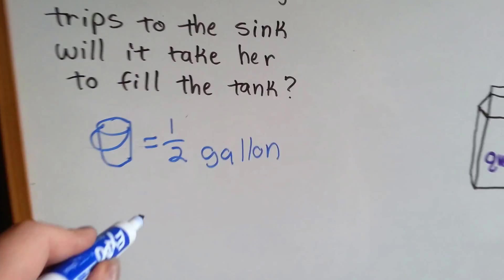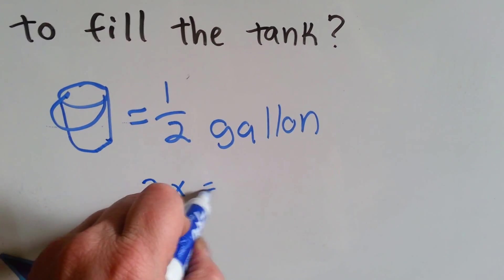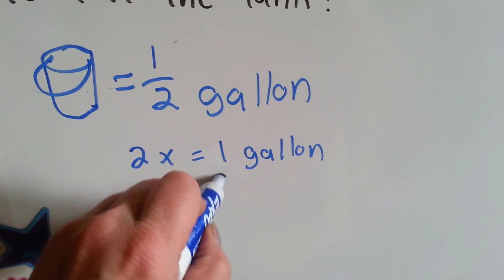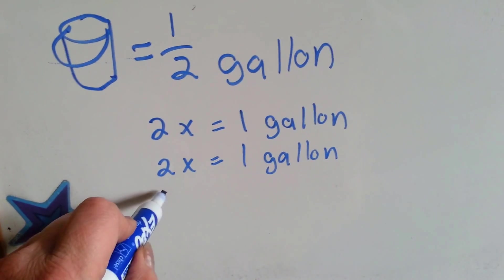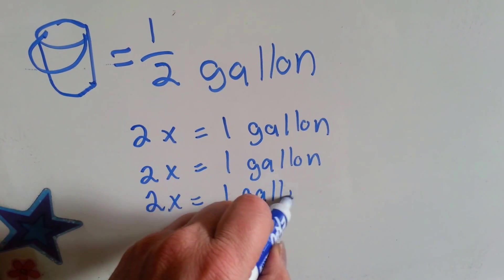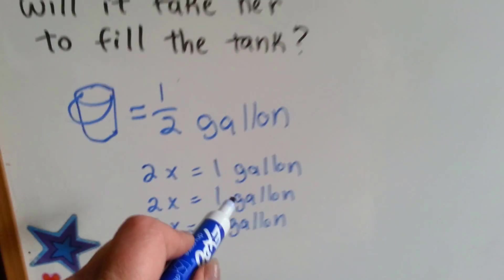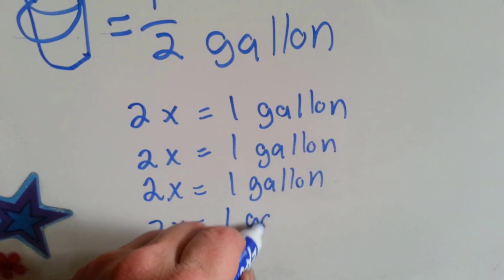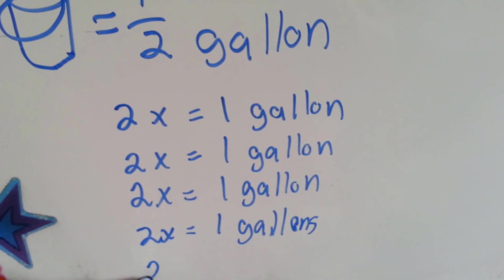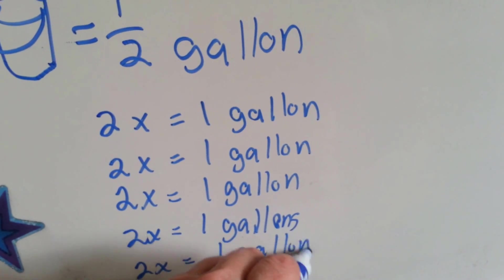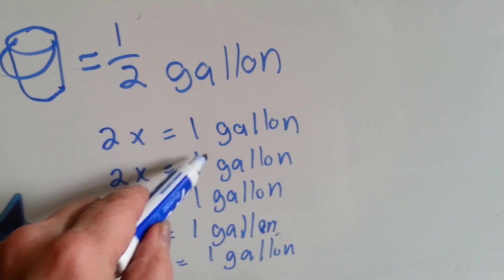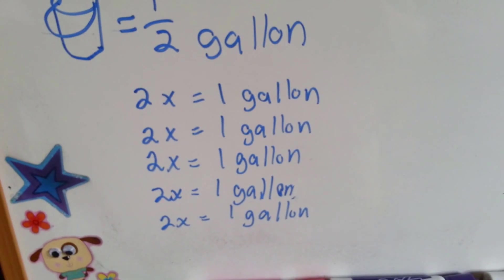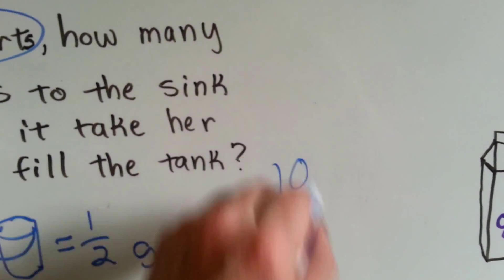She goes to the sink two times — that's one gallon. Two more times — that's two gallons. Two more times — that's three gallons. The fish tank is five gallons, so continuing: two more trips for four gallons, two more for five gallons. How many times did she go to the sink? Two, four, six, eight, ten. She went to the sink ten trips to fill her fish tank.